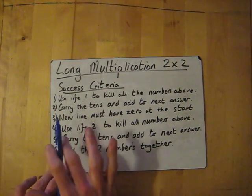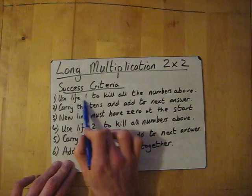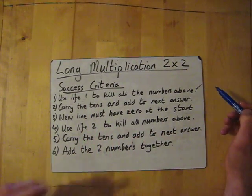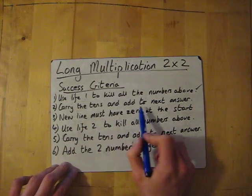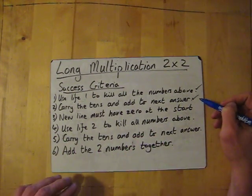So again, always start off long multiplication, you've left one to kill all the numbers above. I've done that a few times, two by one, three by one, four by one. Then carry the tens and add to the next answer. It's something those two have been doing.